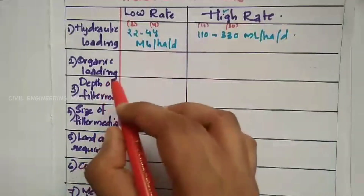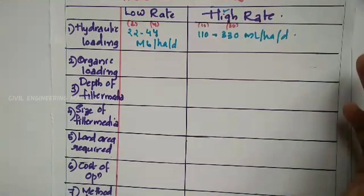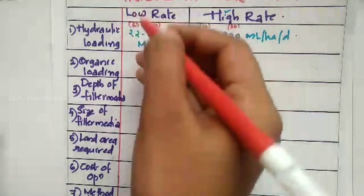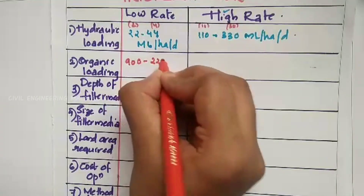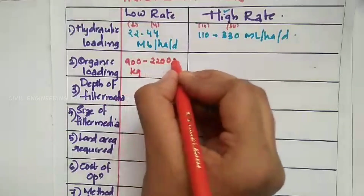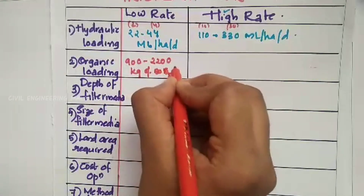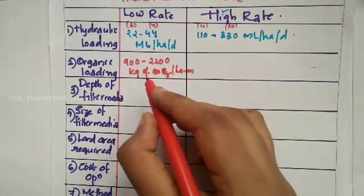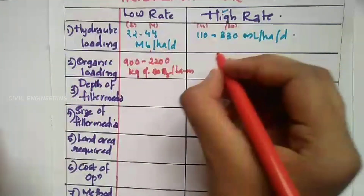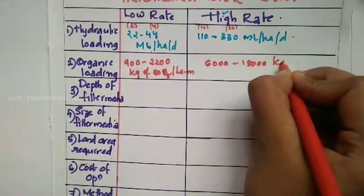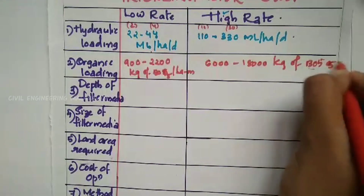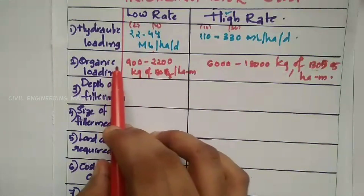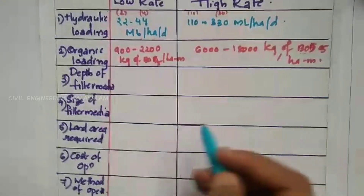Here is the organic loading rate. Recirculating is not used for low rate. BOD5 at 20 degrees Celsius is used as the measure. The organic loading rate for low rate is 900 to 2200 kg of BOD5 per hectare metre. For high rate, it is 6,000 to 18,000 kg of BOD5 per hectare metre.